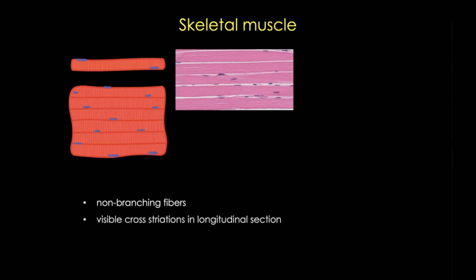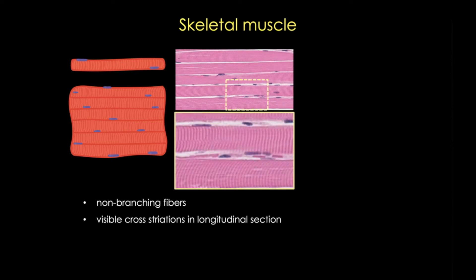What you're actually looking at is the sarcomeric organization of skeletal muscle — the arrangement of the myofilaments of actin and myosin in sequential order from one end of the muscle fiber to the other. And if we look even closer, you can really appreciate the striations. In this view, we can also easily see the other important distinguishing characteristic of skeletal muscle: the peripheral nuclei located on the edges of each cell.